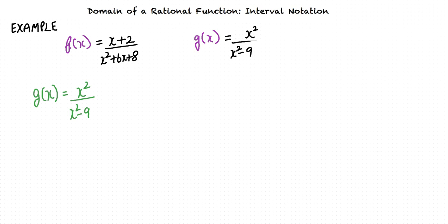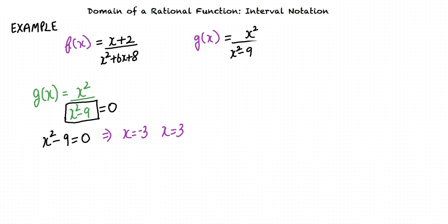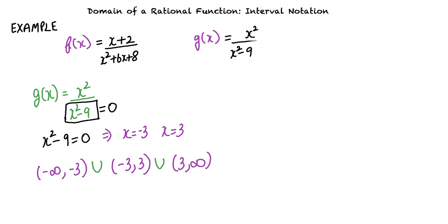Consider the function g(x) = x² / (x² - 9). The function will not exist when the denominator equals zero. Equating x² - 9 to 0, we find that the points -3 and 3 are not included in the domain. Thus, the domain can be represented as (-∞, -3) ∪ (-3, 3) ∪ (3, ∞).